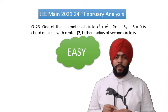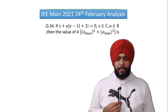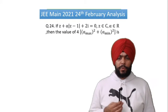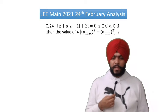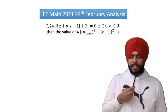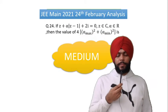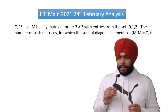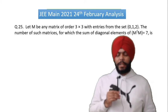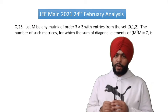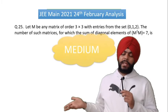Question number 24: if z plus alpha into z minus 1, modulus plus 2y equals 0. It involves complex numbers, so it is a medium level question. Question number 25 has matrices and probability mixed together — definitely medium level, but doable if you have practiced this type of exam question.